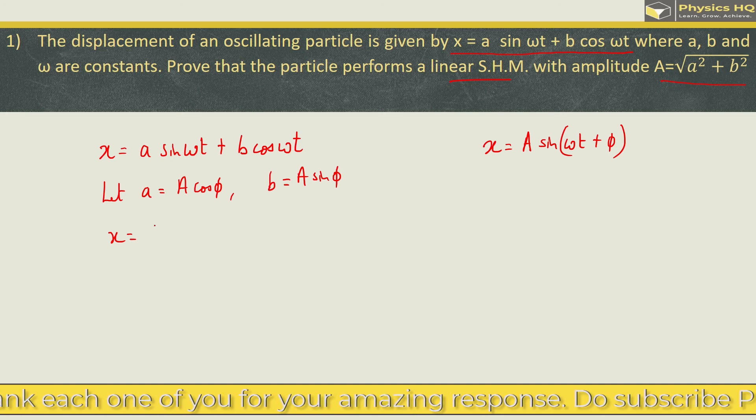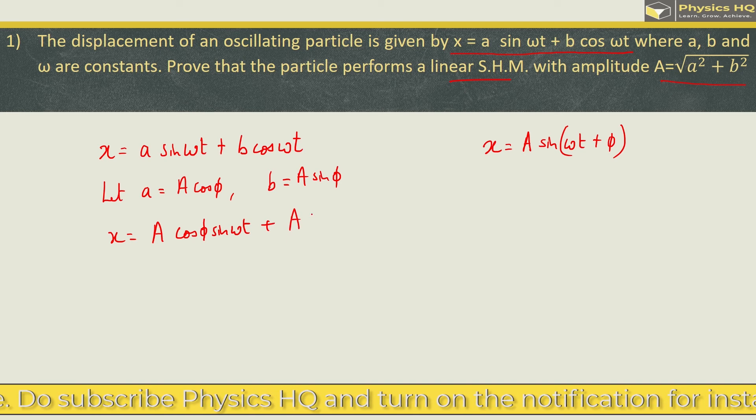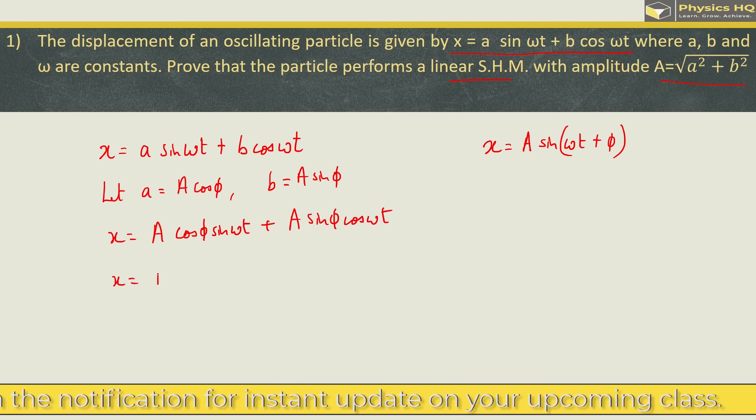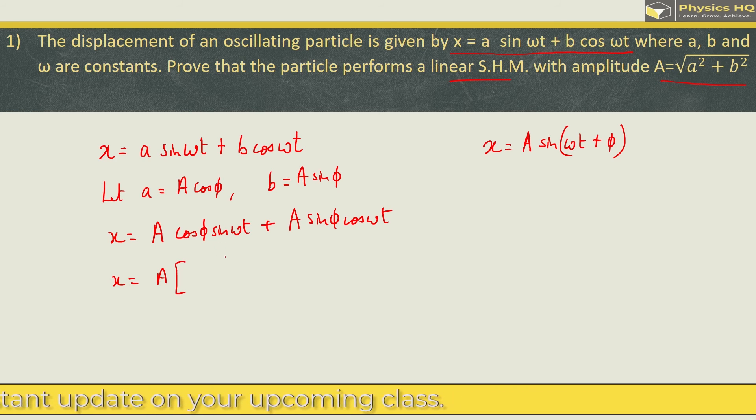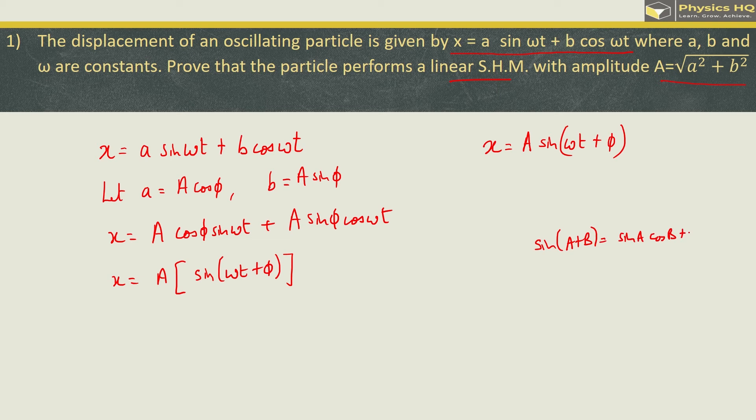Let us put it over here so we got x equals capital A cos phi sine of omega t plus capital A sine phi cos of omega t. So we will have x equals A and from here this is basically the formula of sine of a plus b. So this is sine of omega t plus phi. As you all can remember sine of a plus b is nothing but sine a cos b plus cos a sine b. Now with this what we can say is this displacement is having amplitude A and it is varying sinusoidally with the phase omega t plus phi. So this particle is performing SHM over here.